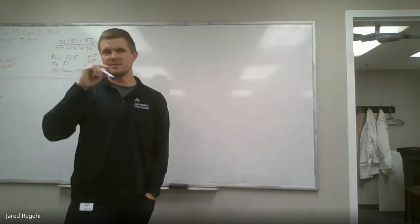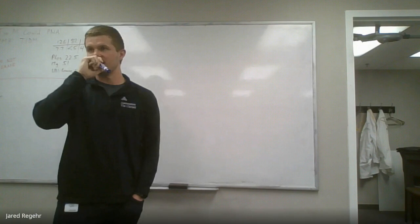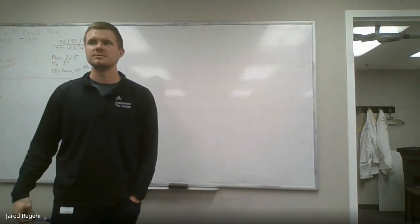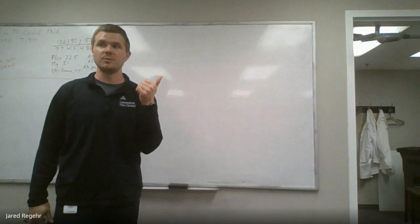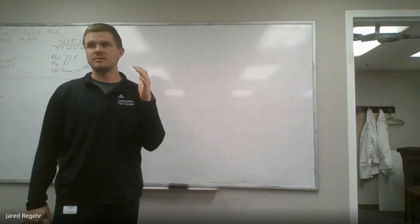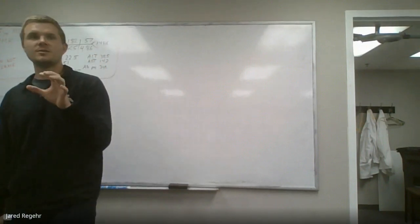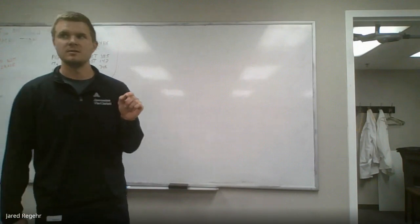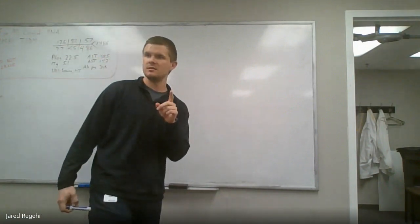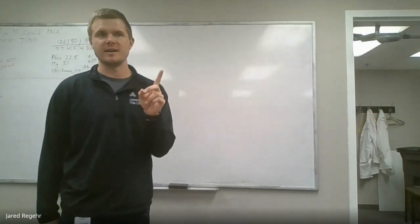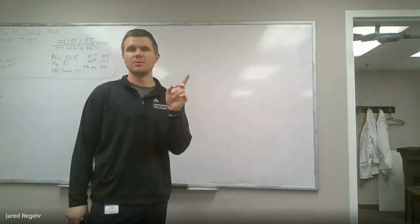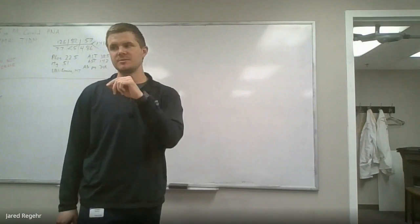Real quick, preeclampsia - how do we diagnose that? Elevated blood pressure greater than 140 over 90, four hours apart, past what gestation? Past 20 weeks. If they have just elevated blood pressure we call that gestational hypertension. So what do they need in order to get preeclampsia?